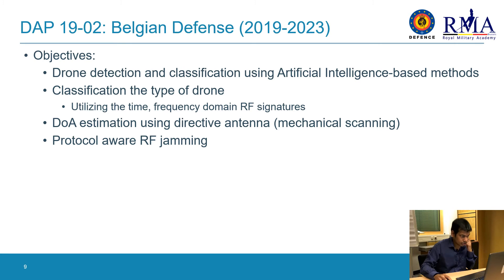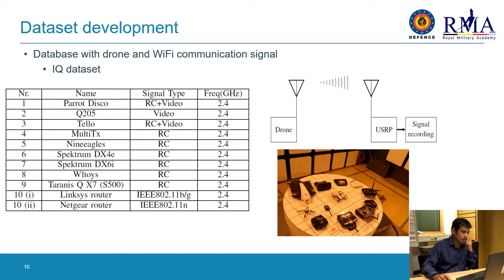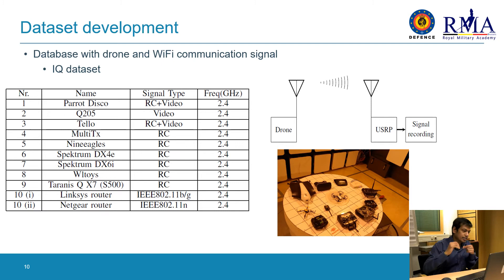Currently, we are working on DAP1902, funded by Belgian Defence. The objective is to detect and classify a drone signal using artificial intelligence-based methods — classifying the type of drone by utilizing time and frequency domain RF signatures, estimating direction of arrival using a directional antenna with mechanical scanning, and performing protocol-aware RF jamming. Since we need a database for AI methods and no open-source drone database exists, we started developing our own in an anechoic chamber using commercial drones and controllers we have in the lab.